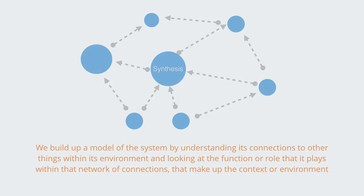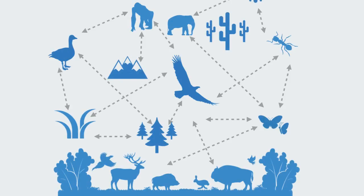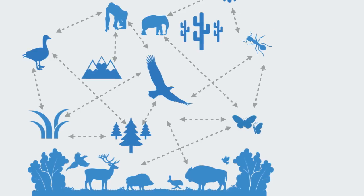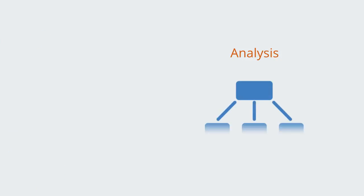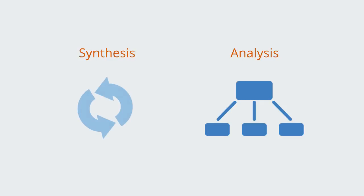So for example, instead of trying to understand something like a bird by taking it into the lab and dissecting it to understand its anatomy, here we would instead go out and look at the bird within its native environment, trying to understand its place and function within the ecosystem as a whole. So whereas analysis is characterized by reductionism, synthesis is characterized by being holistic — we're always referring to the whole context or environment in order to create a model of the system we're interested in.